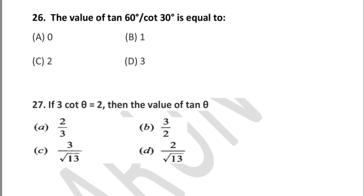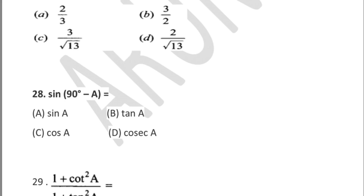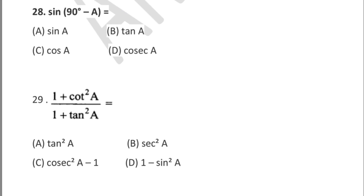Question 27: if 3 cot θ = 2, then the value of tan θ is — option A: 2/3, option B: 3/2, option C: 3/√3, option D: 2/√3. Question 28: sin(90° − A) is equal to — option A: sin A, option B: tan A, option C: cos A, option D: cosec A.